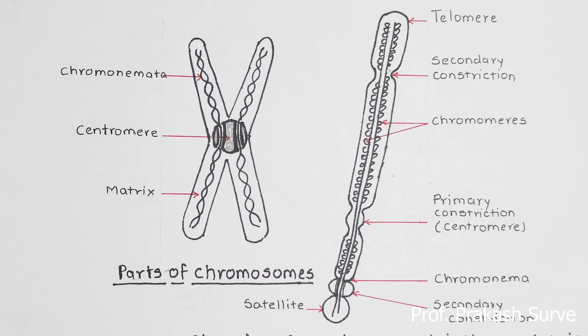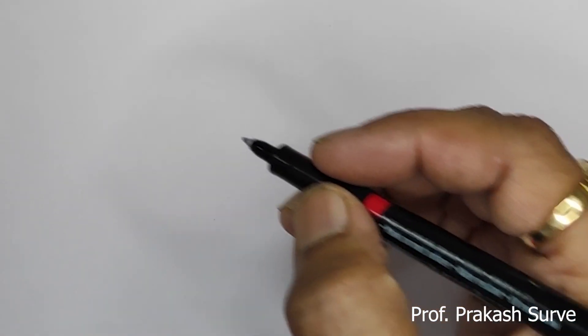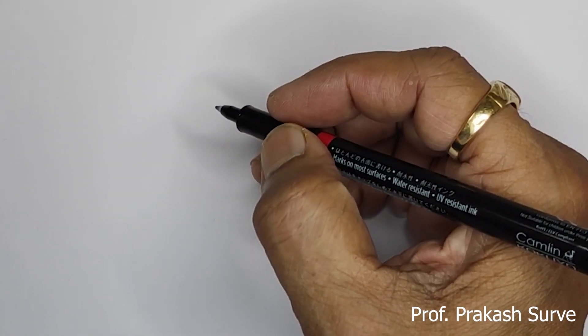Welcome dear student on my channel. Today we will see about the structure of chromosome. First we will see about the parts of the chromosomes and then the chromosomes showing secondary constriction and details.